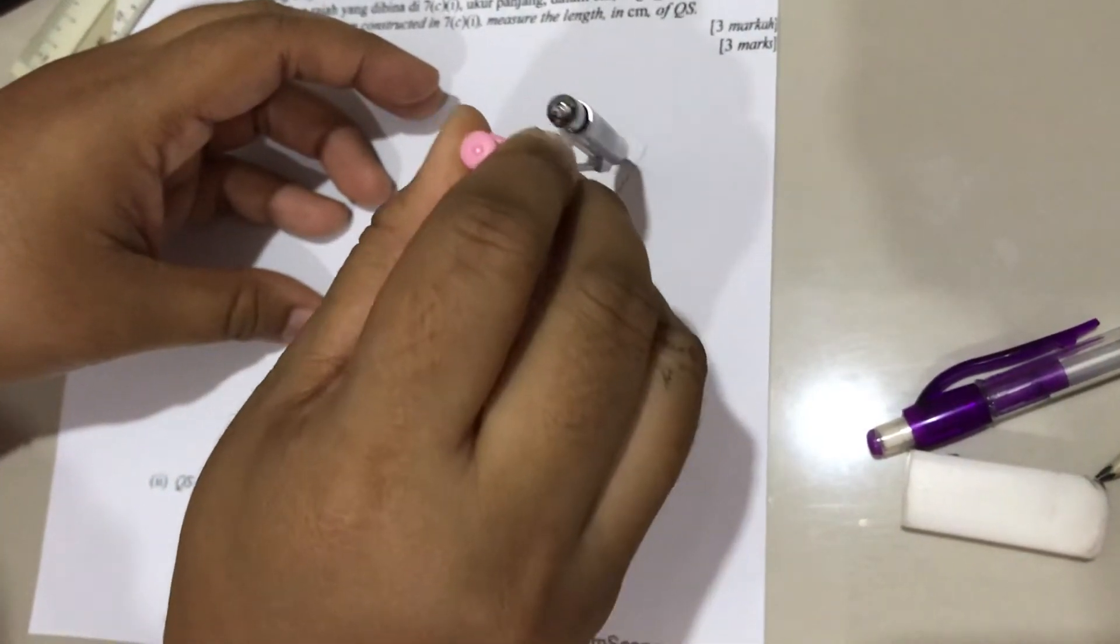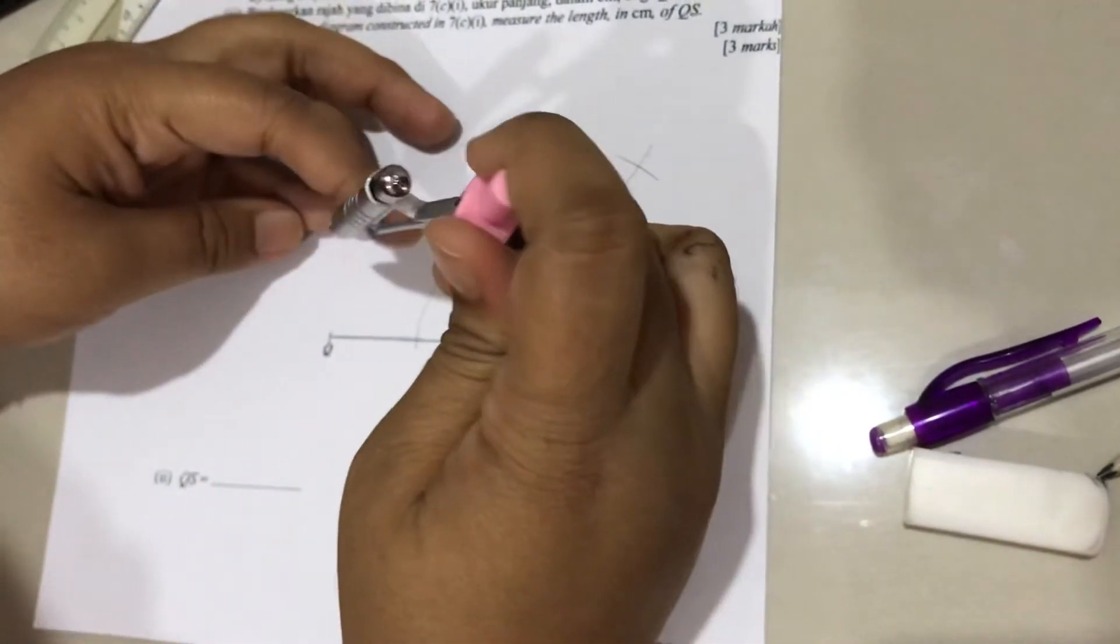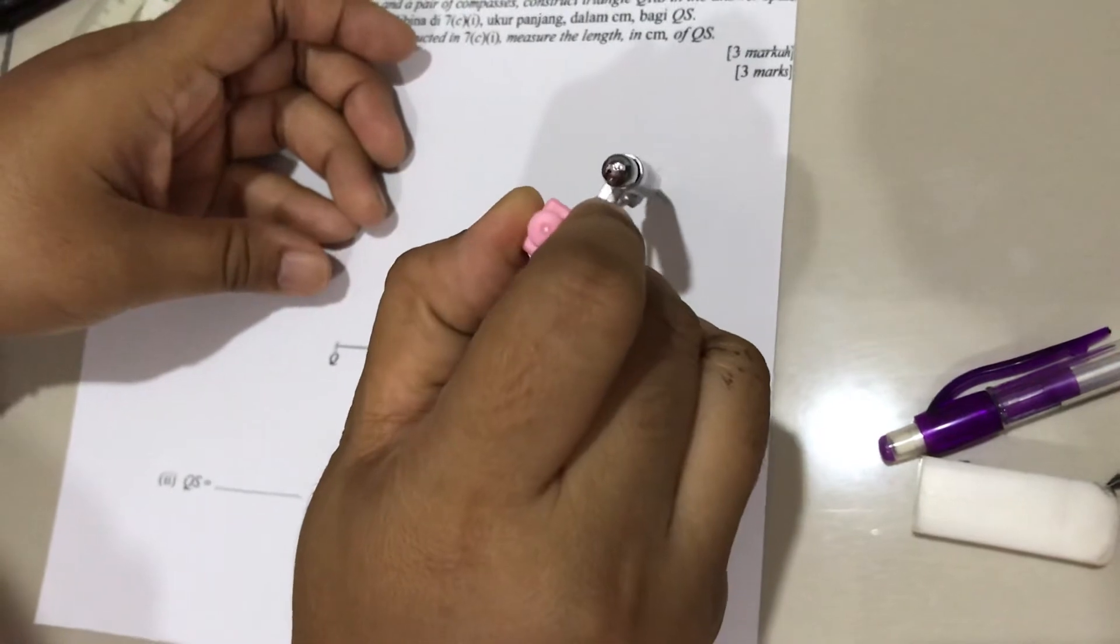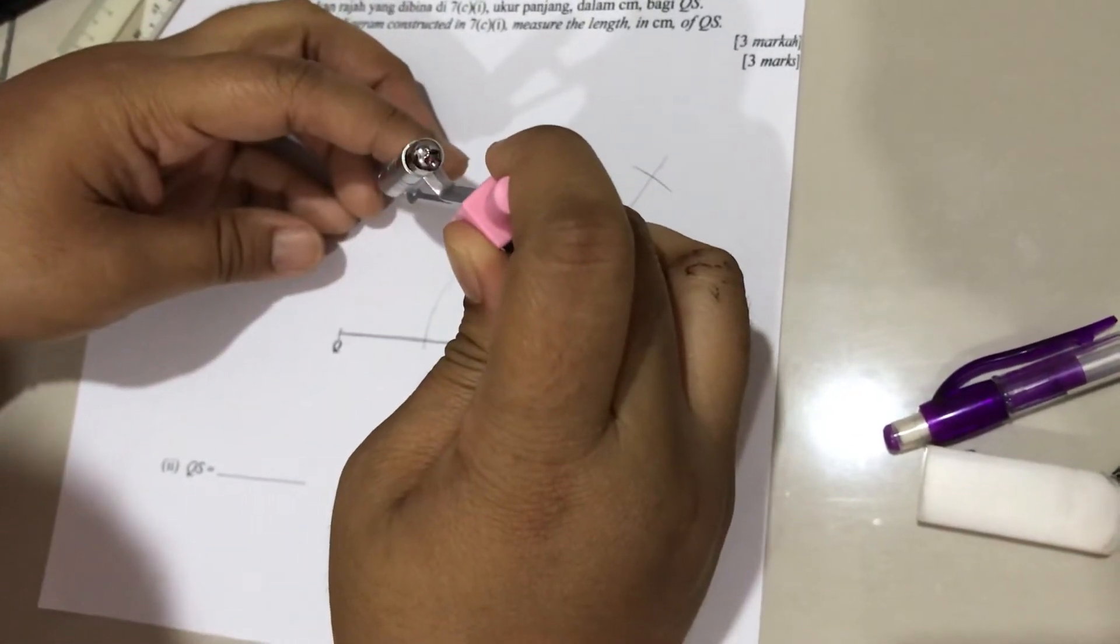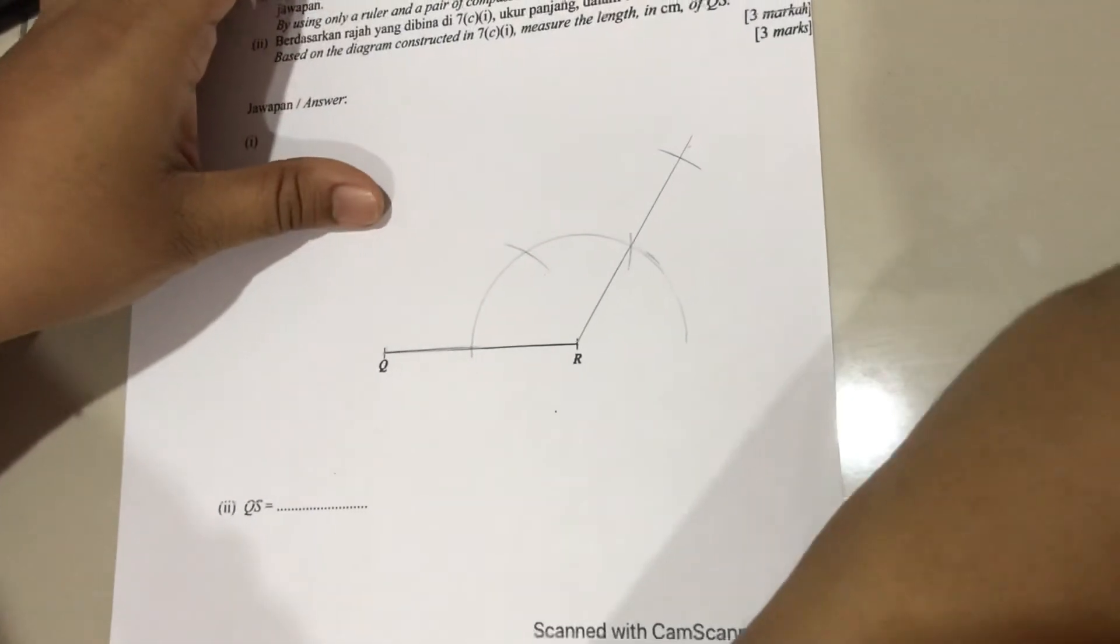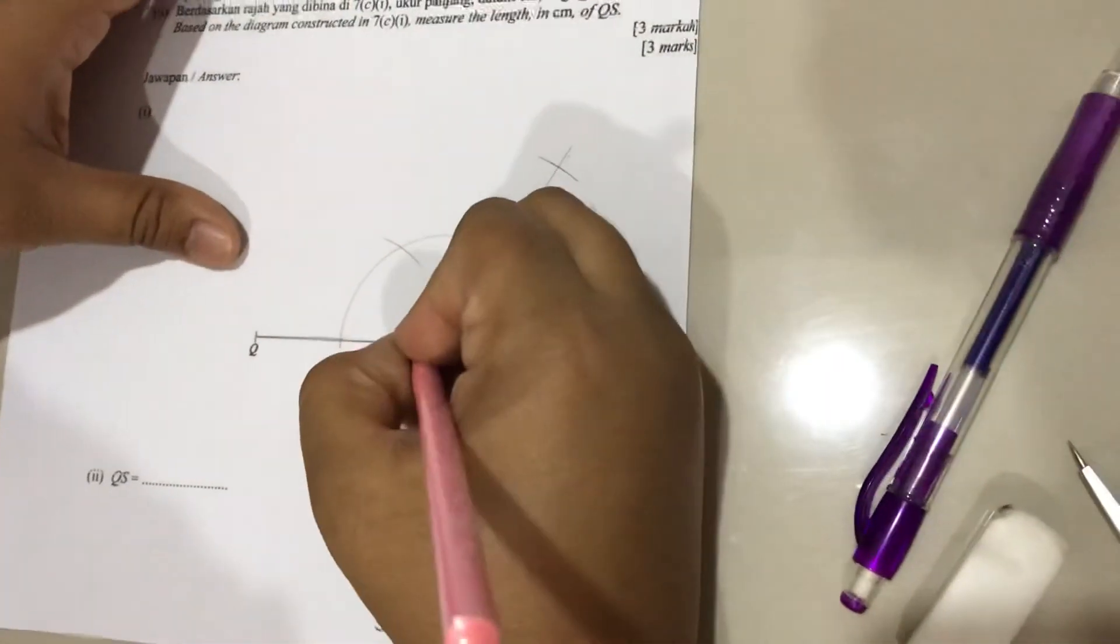So mark here. This size equals here because this is isosceles. They're equal. And then label here 120 degrees.